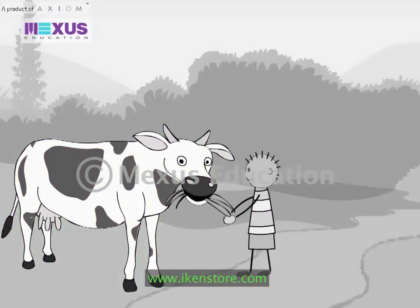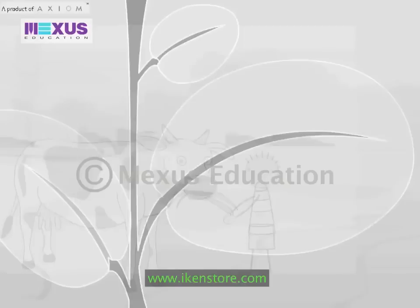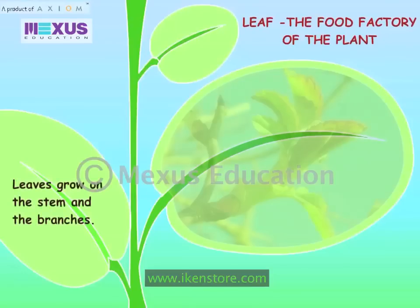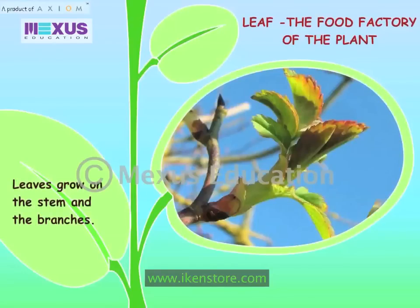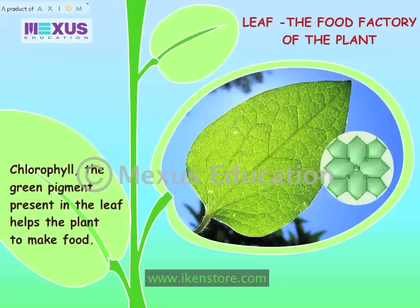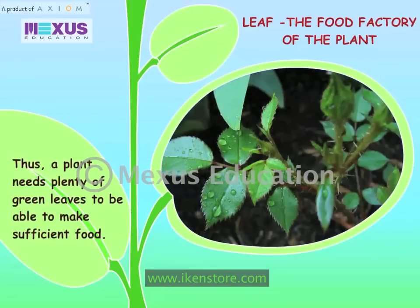Leaves - the food factory of the plant. Leaves grow on the stems and branches. Food is made in the leaves. Chlorophyll, the green pigment present in the leaf, helps the plant to make food. Thus, a plant needs plenty of green leaves to be able to make sufficient food.